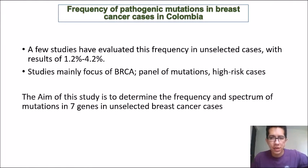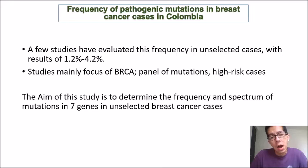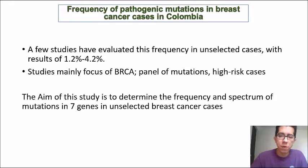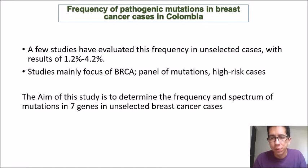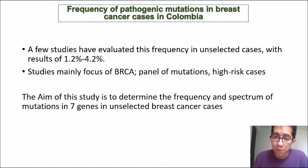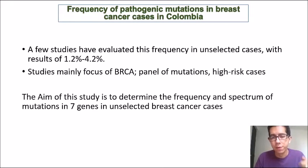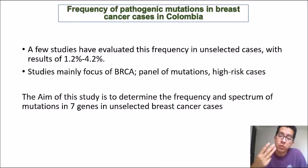The frequency of pathogenic mutations in breast cancer cases has been evaluated in Colombia, but only a few studies have assessed this in unselected cases, with results varying from 1.2 percent to 42.2 percent. These studies have mainly focused on BRCA genes using panels of mutations in high-risk cases. The aim of this study is to determine the frequency and spectrum of mutations in seven genes in unselected breast cancer cases from three cities of Colombia.